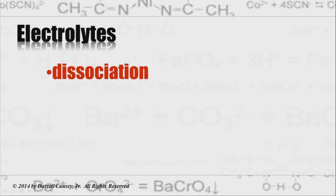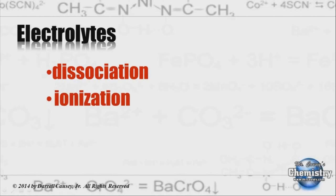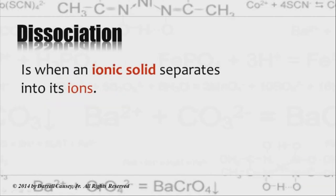Two forms of electrolytes: we have electrolytes formed by dissociation and electrolytes formed by ionization. Dissociation is when an ionic solid separates into its ions, such as sodium chloride, NaCl, which is an ionic compound. When put in water, it separates into sodium ions and chlorine ions.